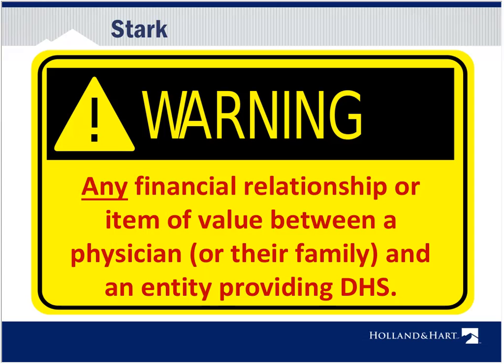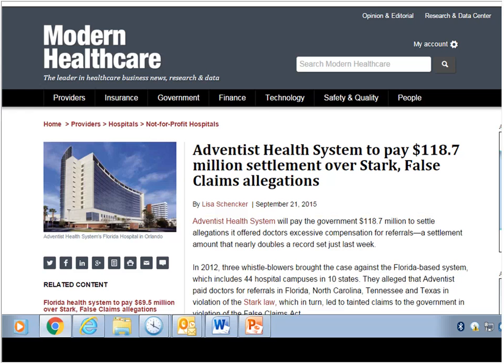Any financial relationship or item of value between a physician or their family and an entity providing designated health services (DHS) needs to be reviewed to ensure Stark compliance. The Adventist Health System recently had to pay $118 million for Stark violations — not a good situation. You simply need to make sure arrangements are structured to satisfy Stark at the outset.